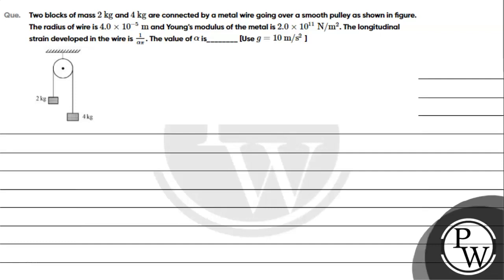Hello guys, let's read a given question. The question says: two blocks of mass 2 kg and 4 kg are connected by a metal wire going over a smooth pulley as shown in the figure. The radius of the wire is 4 × 10⁻⁵ meter and Young's modulus of the metal is 2 × 10¹¹ N/m². The longitudinal strain developed in the wire is 1/αn — find the value of α.